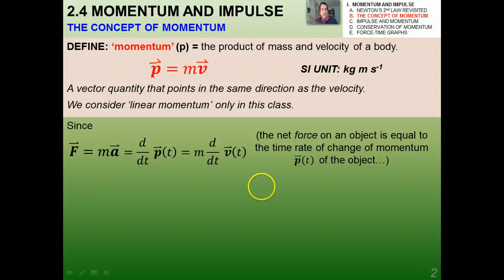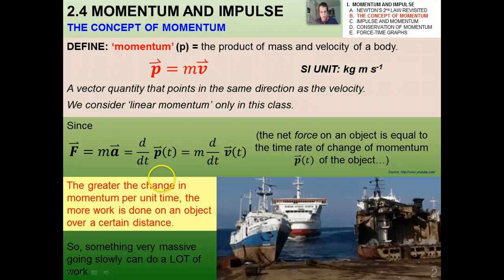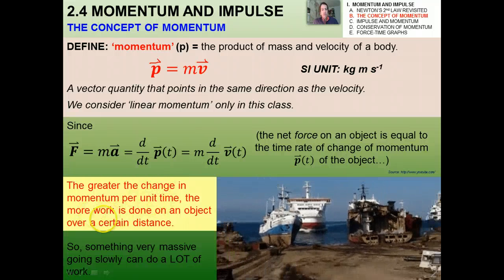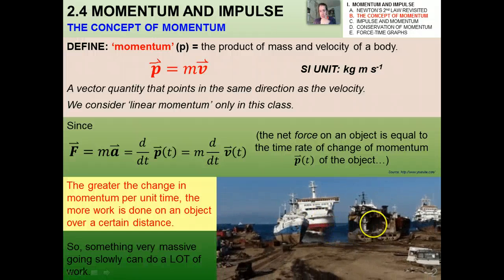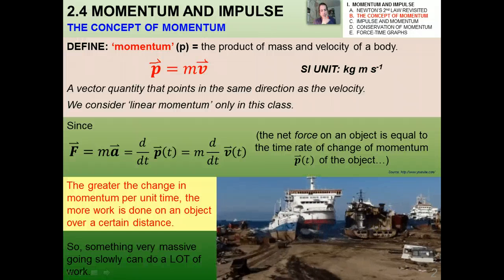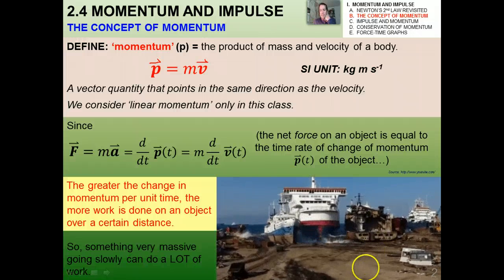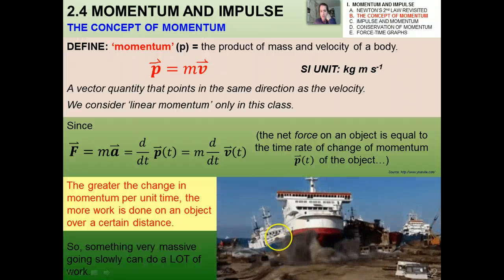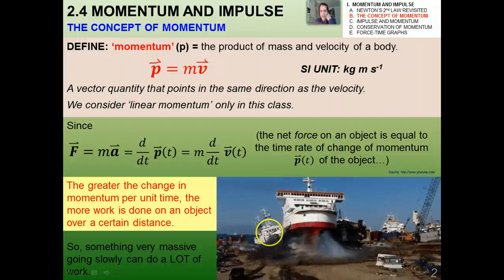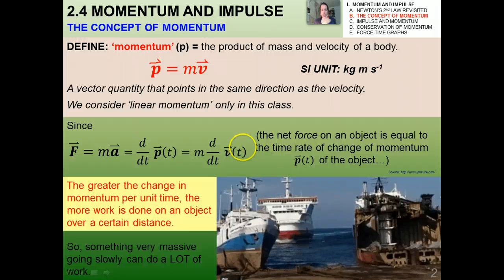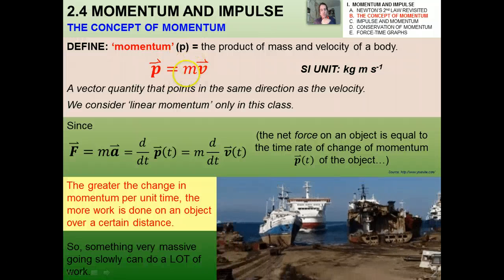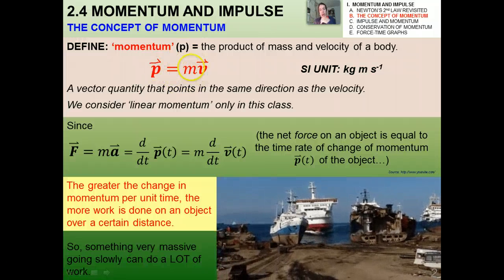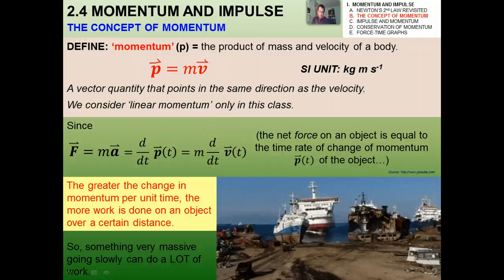Here's your formal definition of momentum. It's simply the product of mass and velocity of a body. P is the symbol, and it's mass times velocity. The SI unit of momentum is obviously a kilogram meter per second. Notice that a Newton is a kilogram meter per second squared when we divide this by T. Just want to point out that momentum is a vector. It's a vector quantity that points in the same direction as the velocity, and we consider only linear momentum in this class.